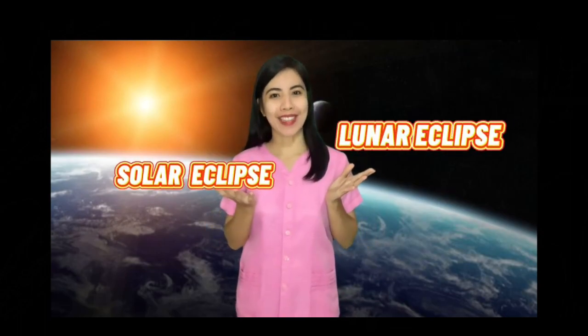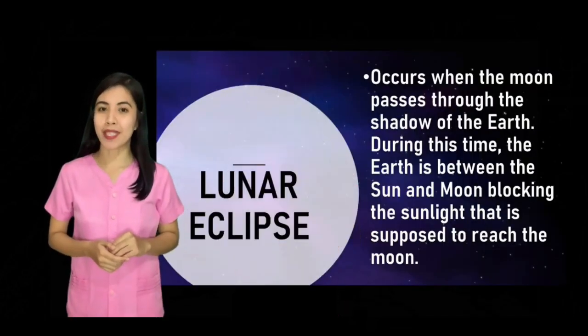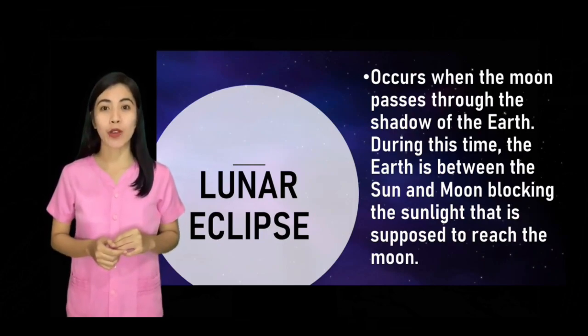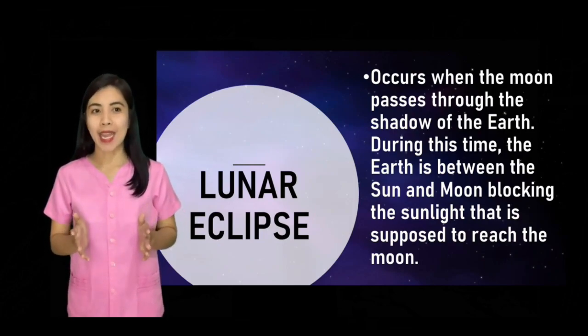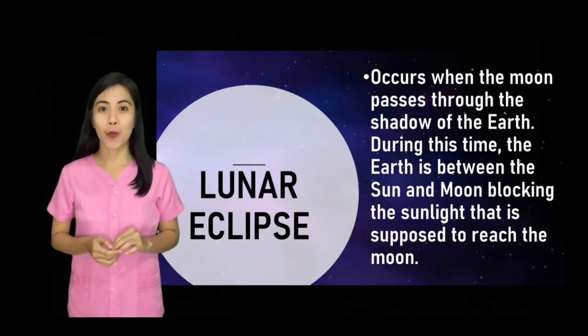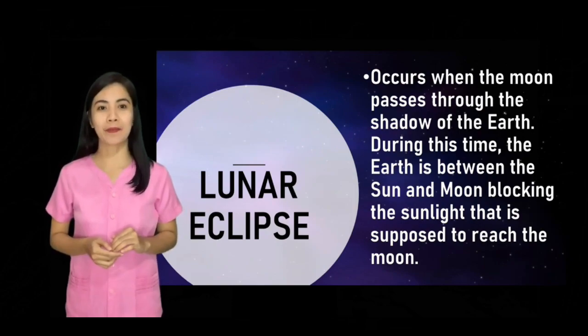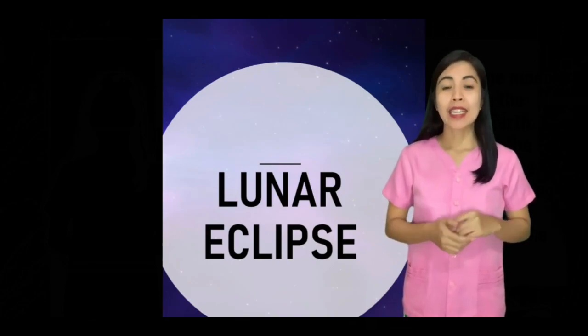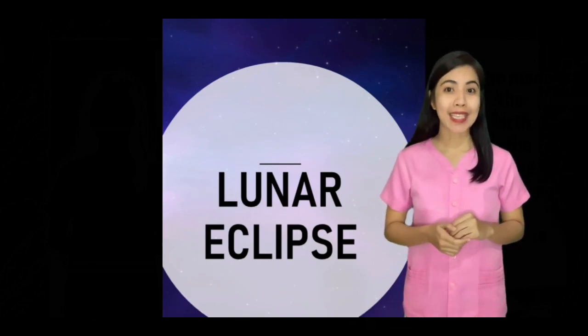What are the two types of eclipse? Correct! We have the lunar eclipse and the solar eclipse. What is a lunar eclipse? It occurs when the moon passes through the shadow of the earth. During this time, the earth is between the sun and the moon, blocking the sunlight that is supposed to reach the moon. In other words, during lunar eclipse, the earth's shadow is being cast on the moon.